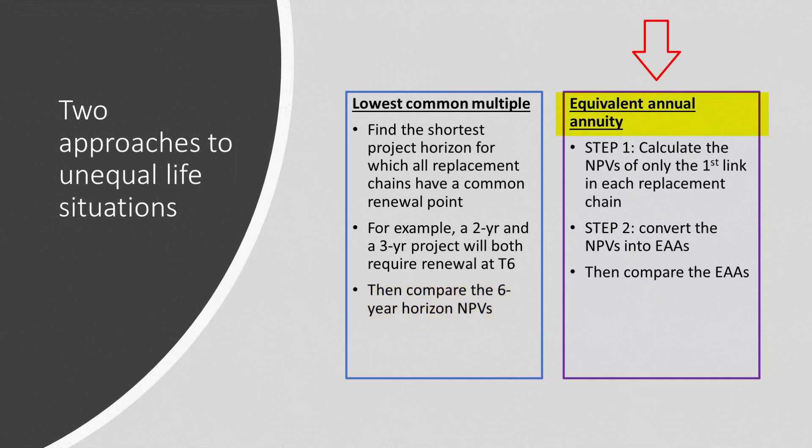The second method is more elegant. In the equivalent annual annuity approach, only the first link in each project replacement chain is considered. The net present value of each of these single-link project chains is calculated, and then this is converted into an equivalent annual annuity. Because these annuities are annual, they can then be validly compared with each other.